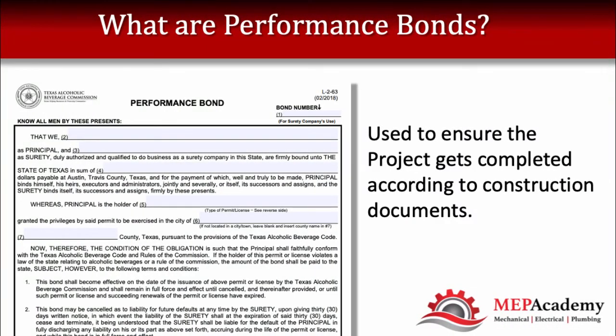What are performance bonds? They're used to ensure the project gets completed according to the construction documents. The bid bond usually also guarantees that your surety will issue a performance bond if you're the successful, responsible, low bidder. But unlike the bid bond, the performance bond will definitely cost you some money. This is where the surety company gets their money, especially if they offered you the bid bond for free — they know that following a successful bid, you'll need to pay for the performance bond.